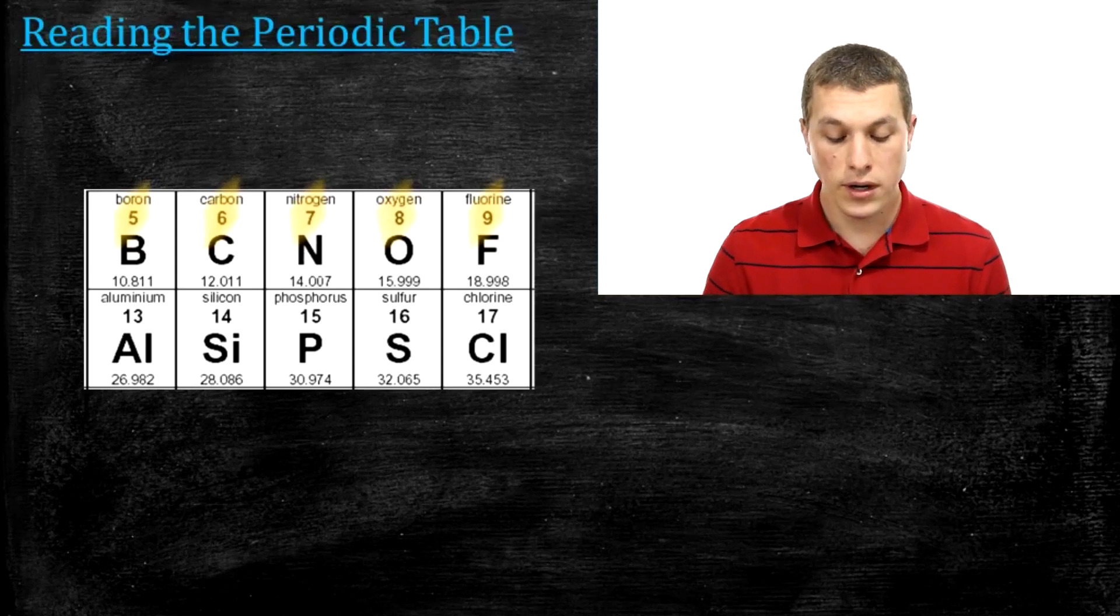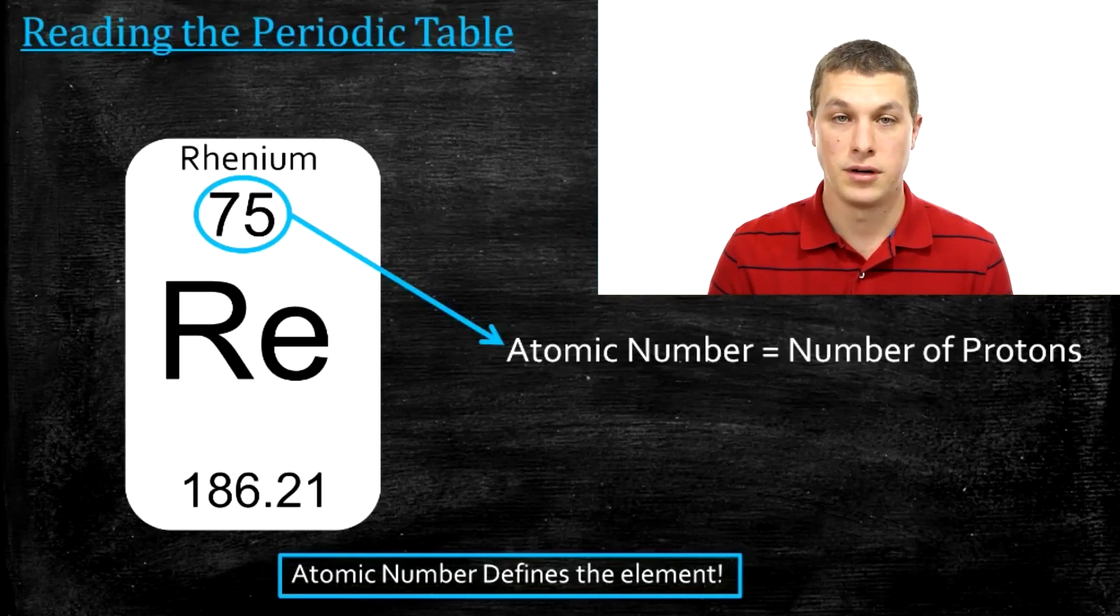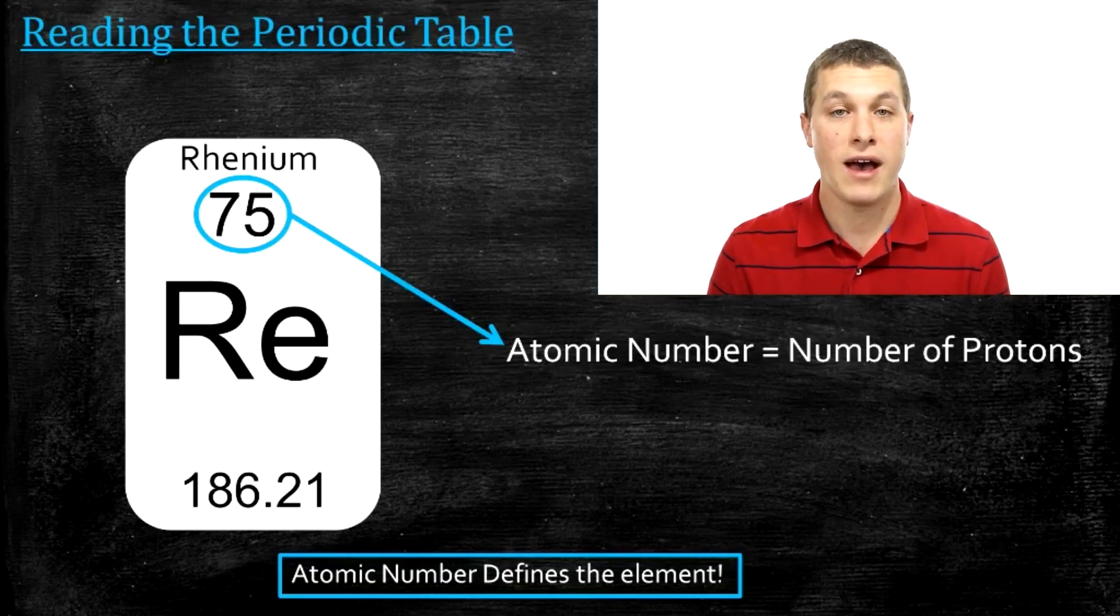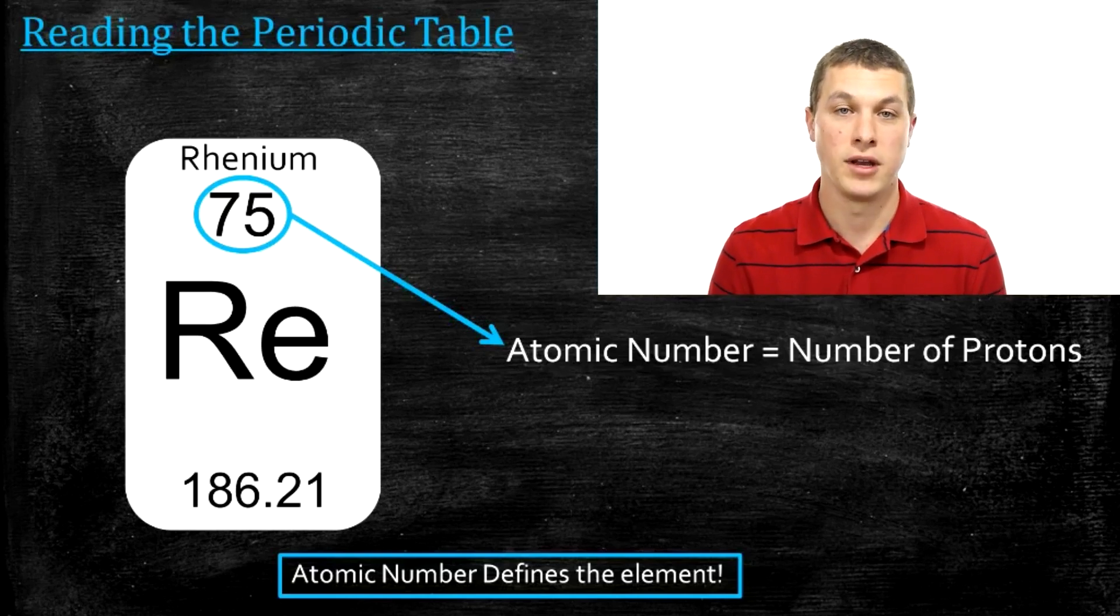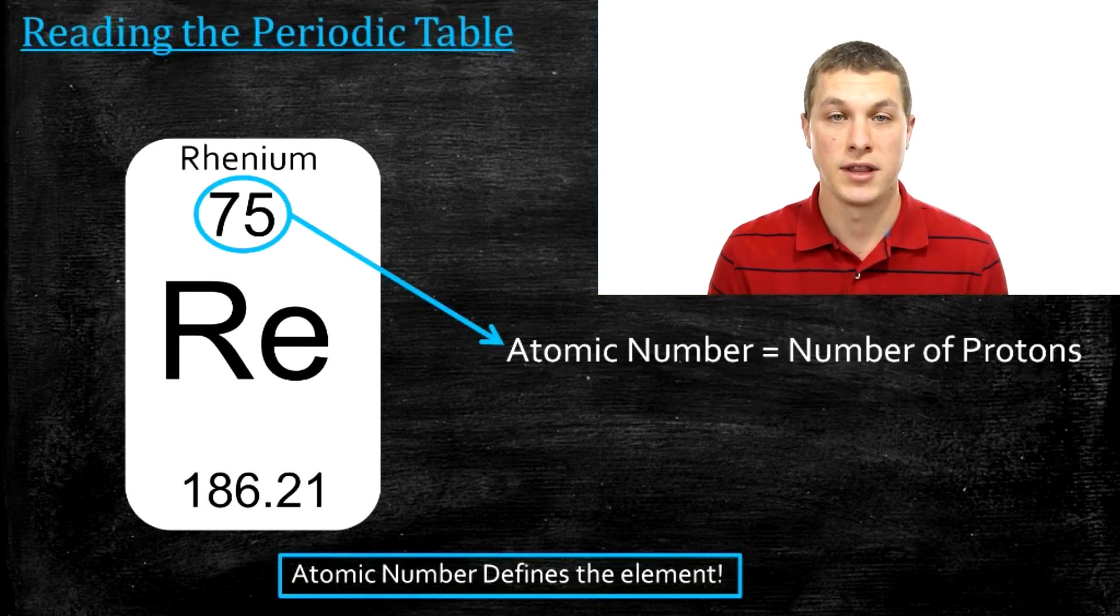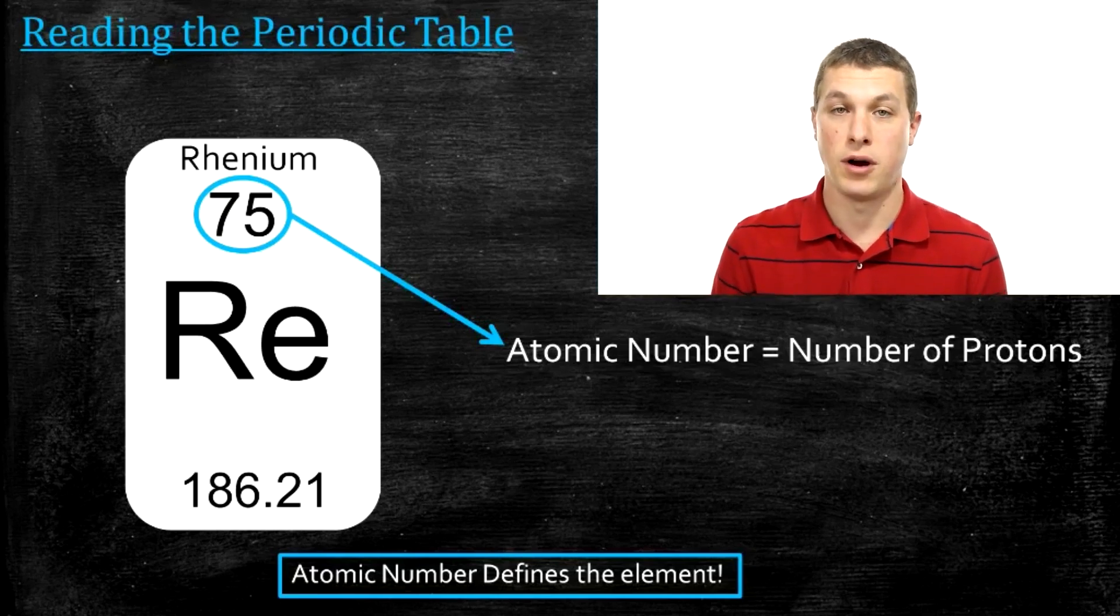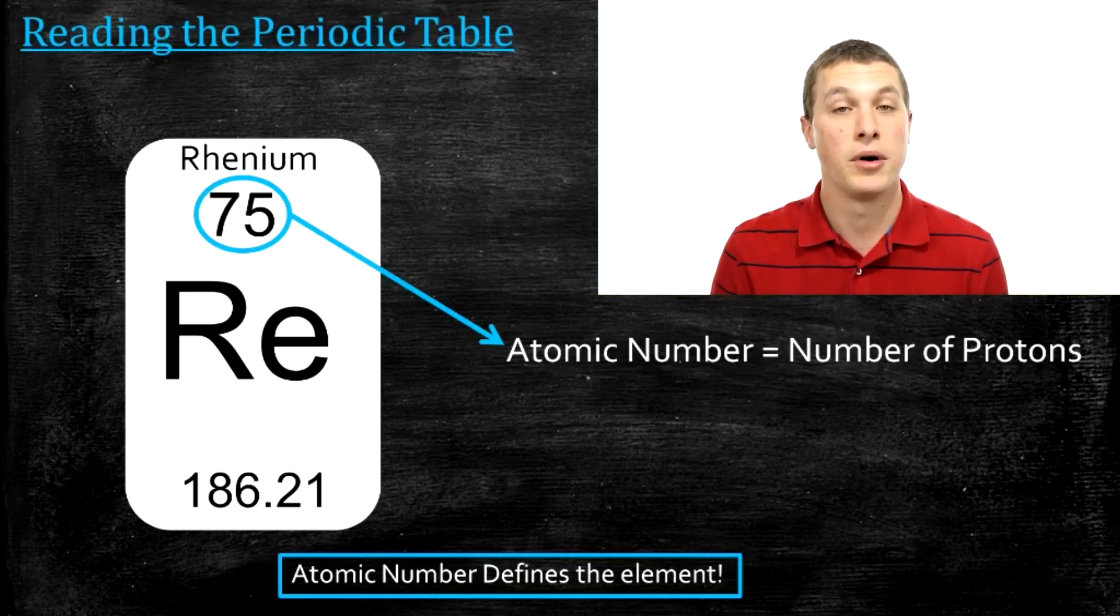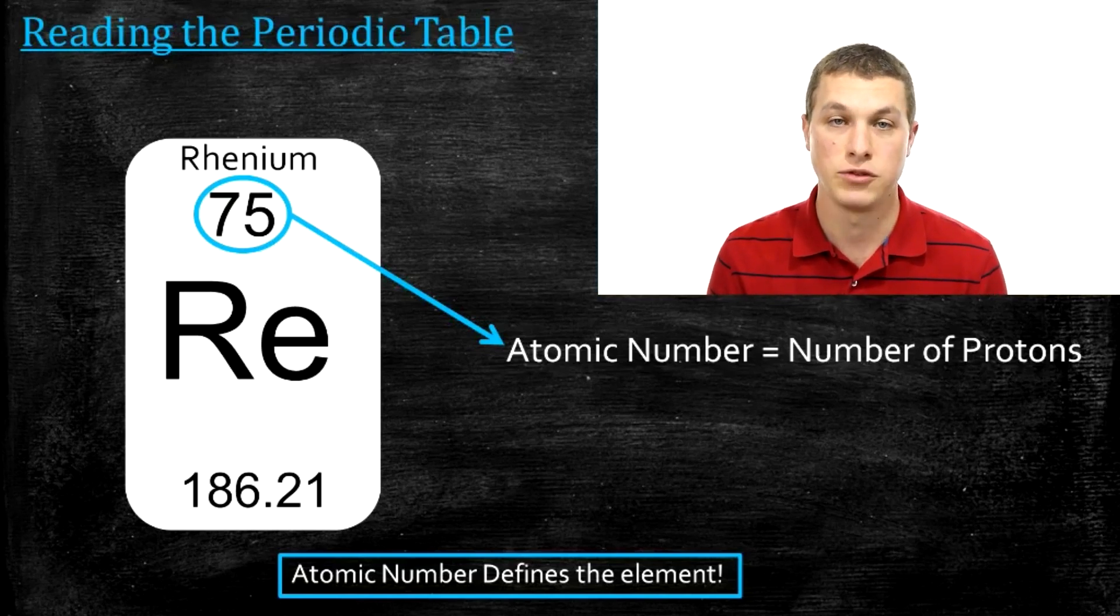And an important thing to note here is that the atomic number, which is the number of protons, actually defines what an element is. What do I mean by that? If you have an element that has 75 protons, it's always rhenium. Always rhenium. So that's what I mean by defines the element. The number of protons directly tells you what an element is. If I change the number of protons from 75 to 76, that's a new and different element. So the number of protons defines the element. That's what it is to be an element, say rhenium, is to have 75 protons. Now the other subatomic particles, which we haven't really talked about, are neutrons and electrons. You can change those and it doesn't change the element. But the second you change the number of protons, you change what the element is.